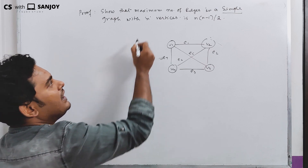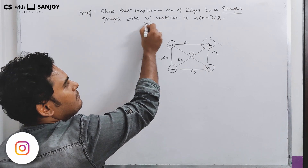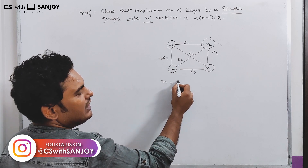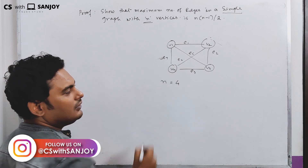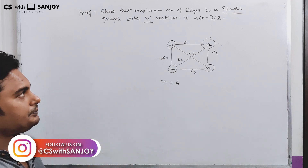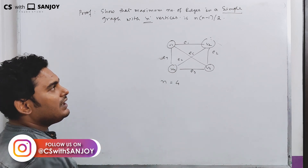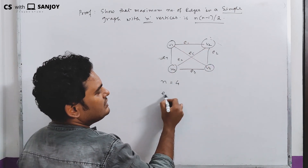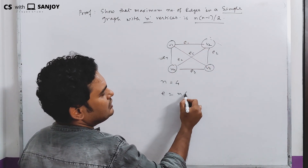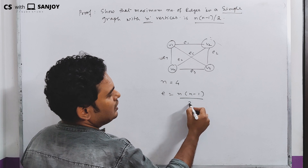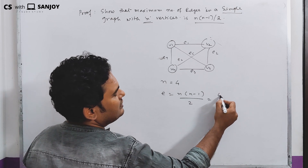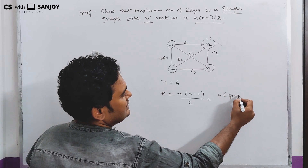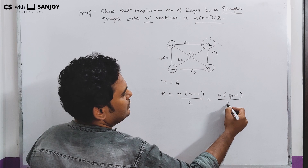Here n is the number of vertices. So what does the formula give? n into n-1 by 2. For n equals 4, that is 4 minus 1 by 2, which is 4 into 3 by 2.